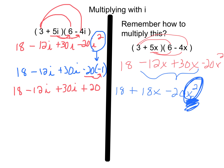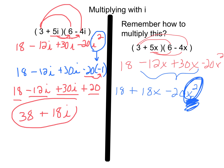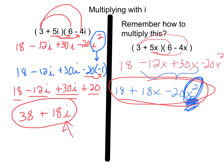Now, negative 20 times negative 1 is positive 20. Let's finish by combining our like terms, just like we did in the prior video when we were combining and adding and subtracting complex numbers. Regular number with regular number: 18 plus 20 is 38. Negative 12i plus 30i is plus 18i. And done. This looks different from the x example, but remember — the i squared we know is negative 1, which allowed us to take this step further and put more things together.